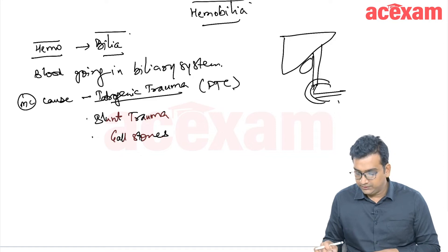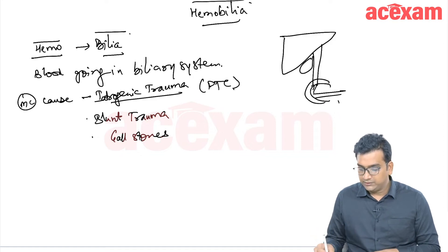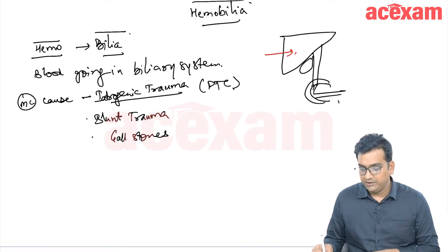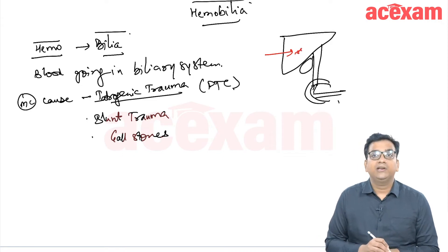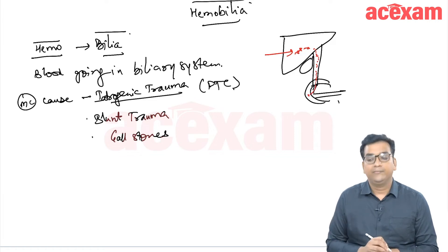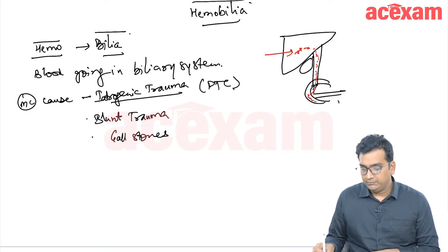Now, there is some puncture here and due to which there is rupture of some blood or arterial bleeding is there, which goes into the intrahepatic biliary radical. And from there, the blood clots reach in the CBD. And from the CBD, they will go into the duodenum. And from the duodenum, there can be either hematemesis or melena.